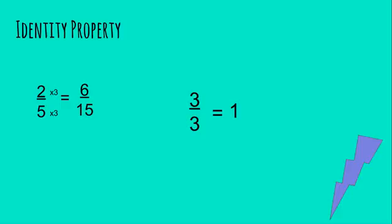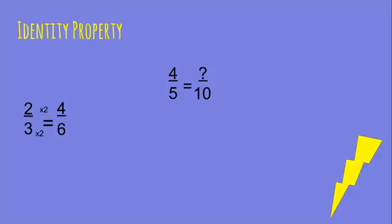So let's try to figure out how many sixths two-thirds equals. So how does the identity property come in here? You guys probably know your multiplication. So three times two is six, and that is the denominator.